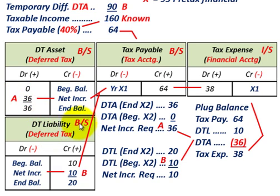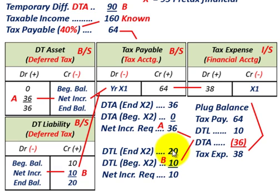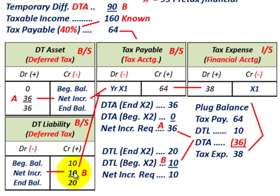Moving to the deferred tax liability: at the beginning of the year we had $10,000, and at end of year we ended up with $20,000. The net increase required is $10,000. Beginning balance is a credit of $10,000; ending balance must be $20,000, so we have a net increase of $10,000 for the year.